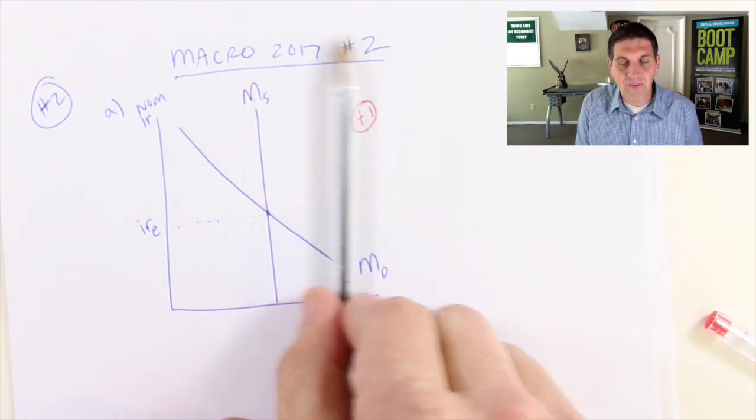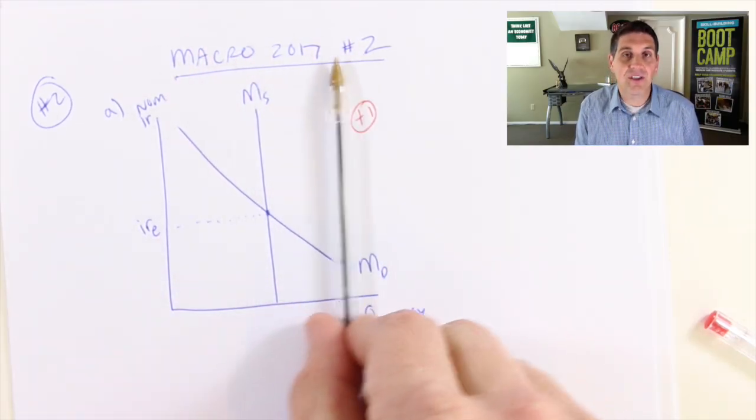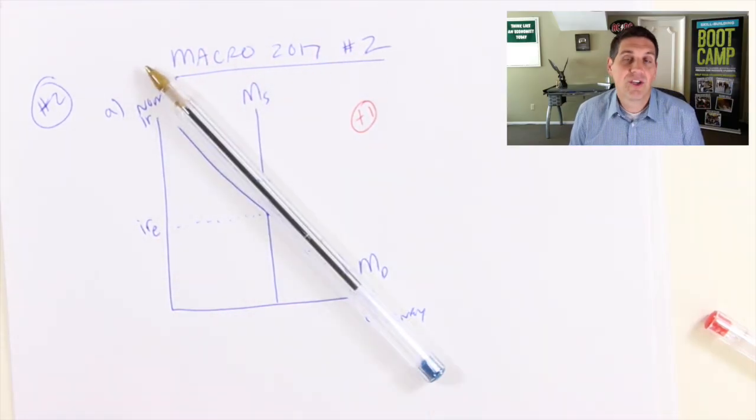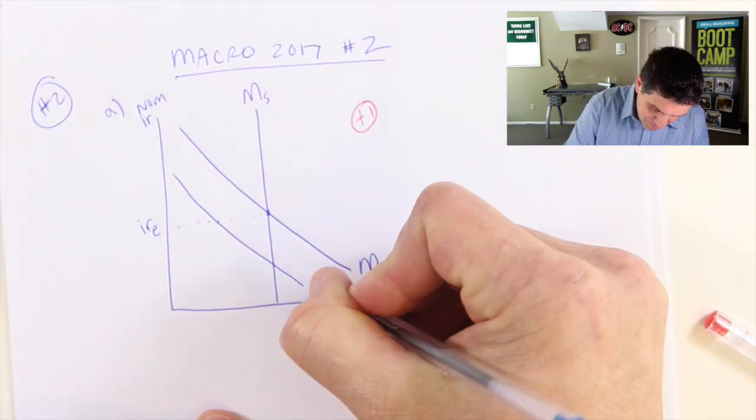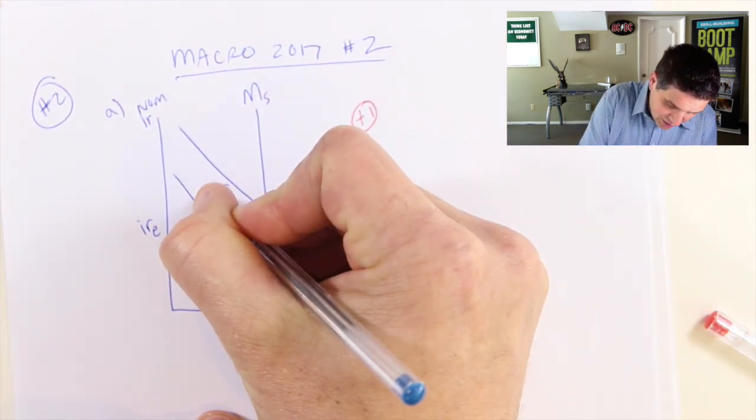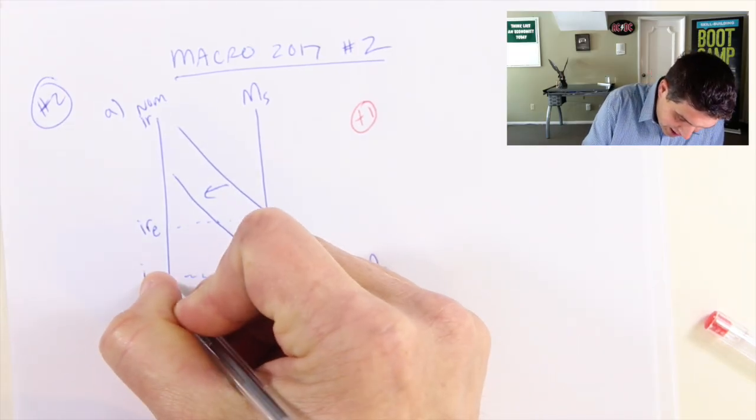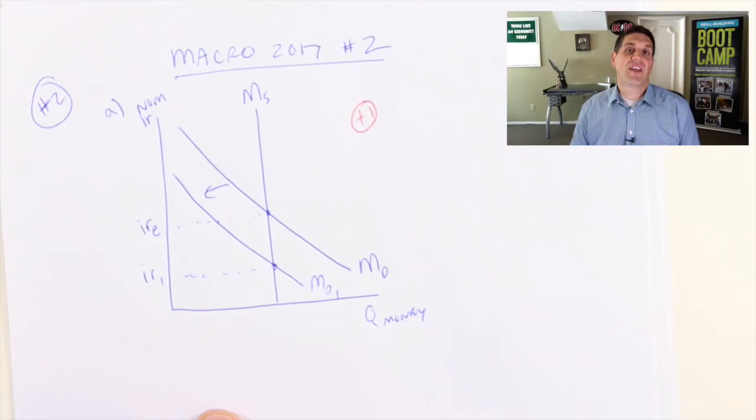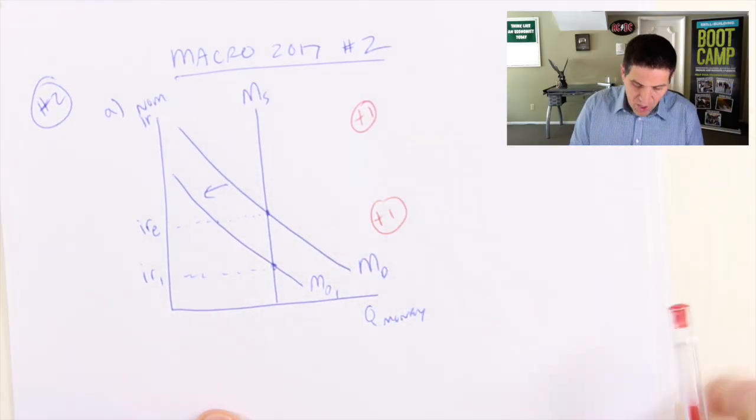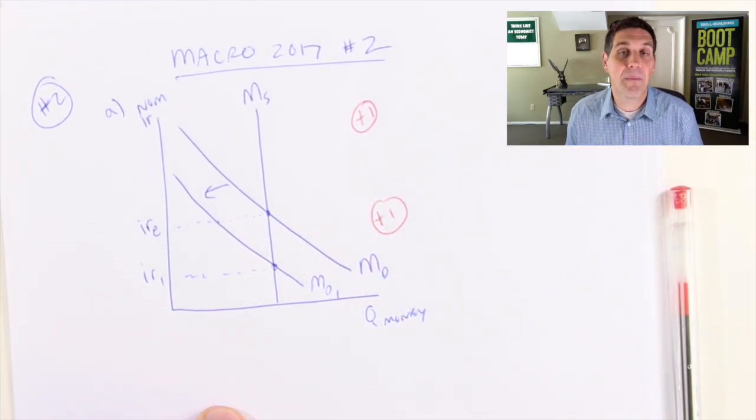The question asks what happens to supply or demand. Remember, supply—the vertical curve—is controlled by the Fed. Individuals change demand. In this case, people demand less money, so money demand shifts to the left. Label the new interest rate IR1. That's the second point—one point for showing the decrease in money demand.